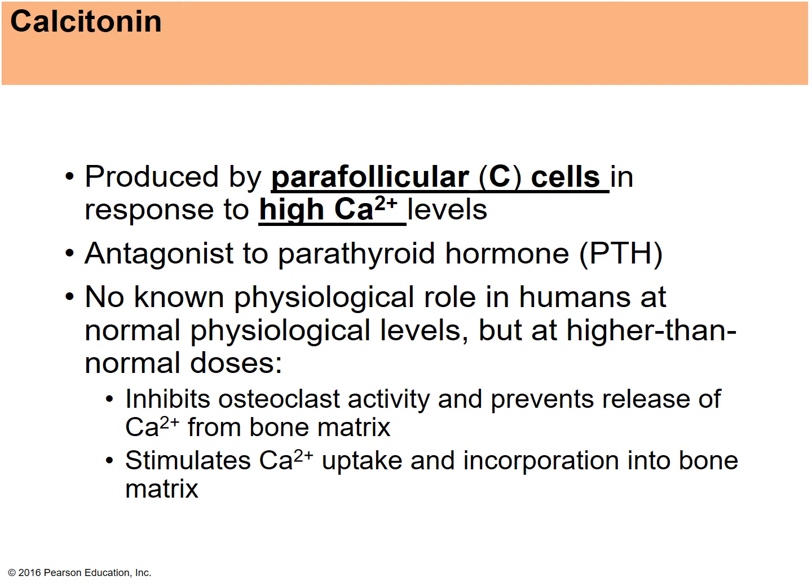Calcitonin is produced by the parafollicular cells and is released in response to high calcium levels — it does the opposite of parathyroid hormone. It inhibits osteoclast activity, which makes sense because osteoclasts break down the bone matrix, releasing calcium. If calcium levels in the blood are too high, you want to bring them down — so inhibit the osteoclasts and don't add more calcium from the bone matrix. Calcitonin also stimulates calcium uptake into the bone matrix by osteoblasts — essentially, put the calcium back in the bone.